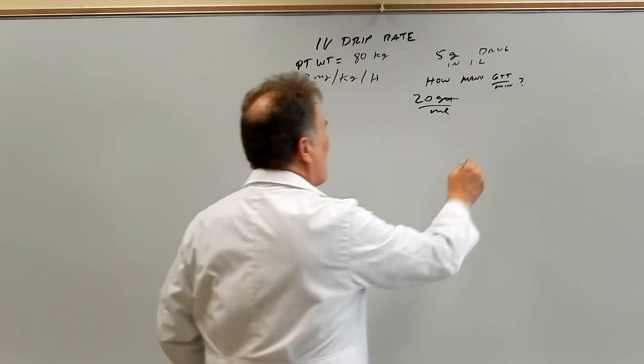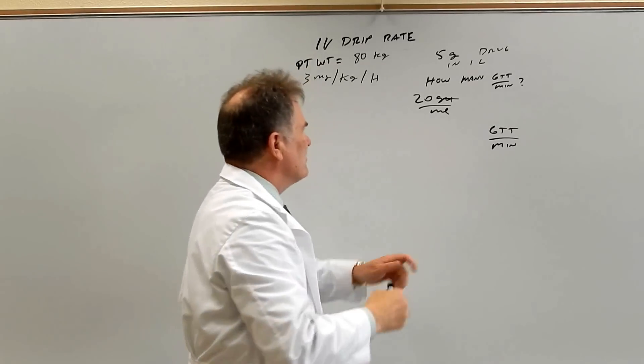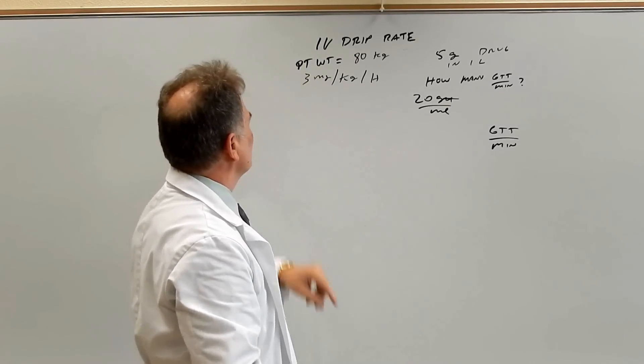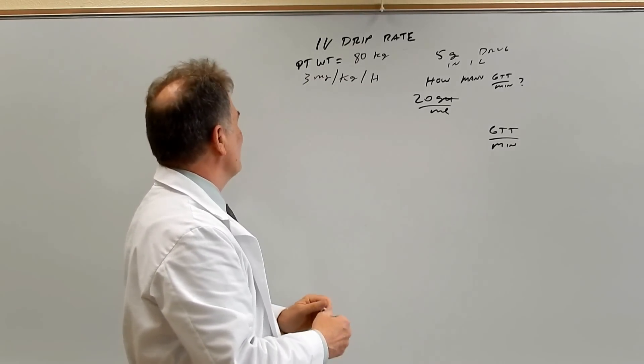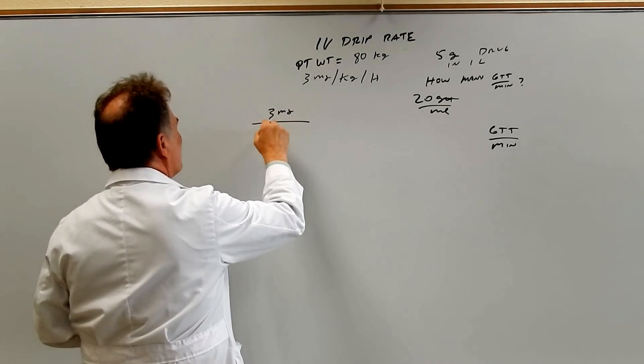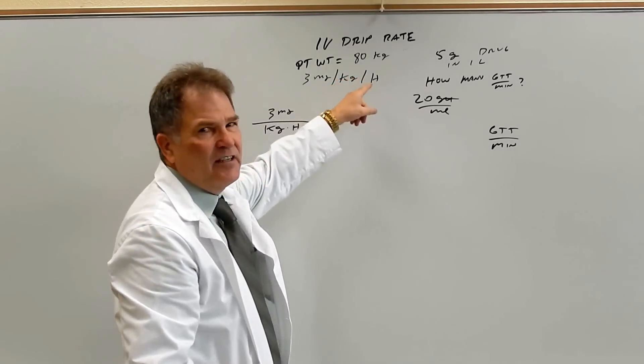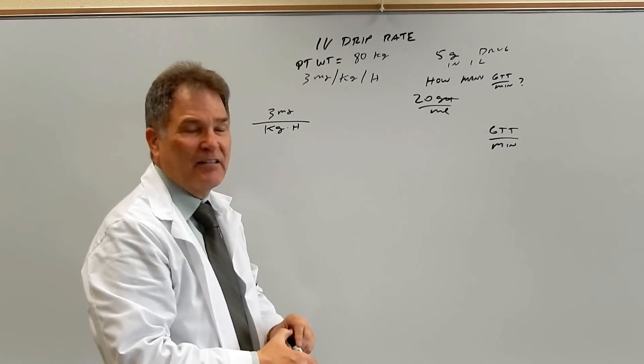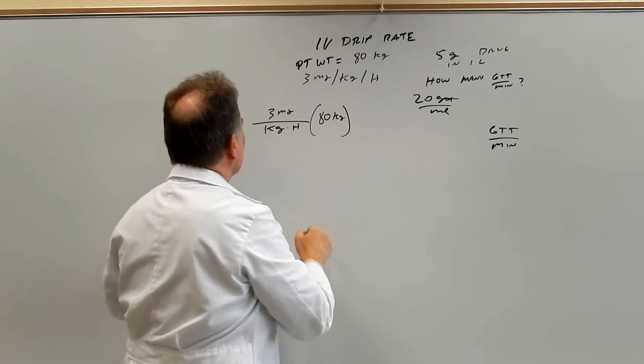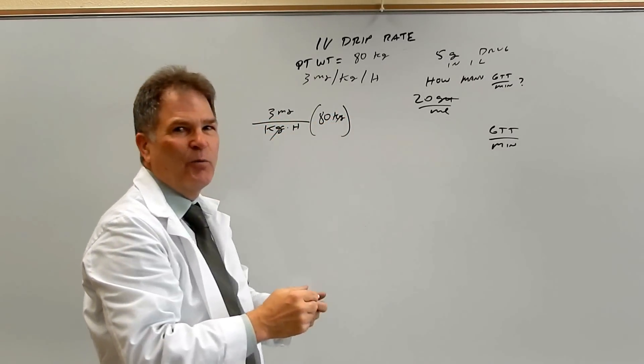So let's just erase that for now. We have to end up with drops per minute. So remember, that's a speed. So we have to start with a speed. So the speed we're starting with is the three milligram per kilogram per hour. So we're going to rewrite it as three milligram over kilogram times hour. Now the patient weighs 80 kilograms. So we're going to have to factor that in. So we're just going to multiply by 80 kilograms. And that will give us how many milligrams per hour we have to administer.